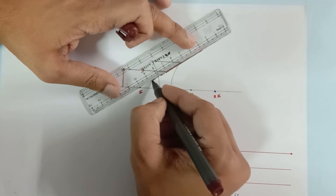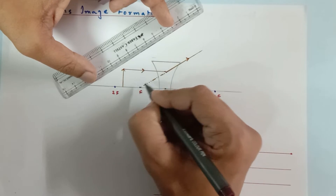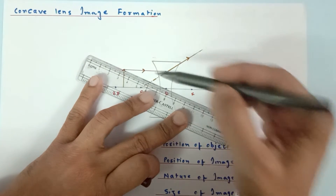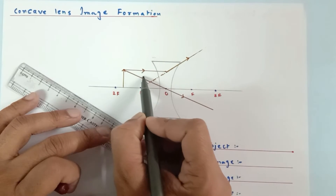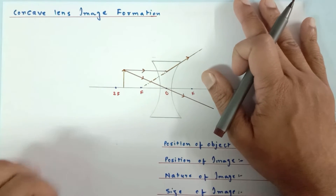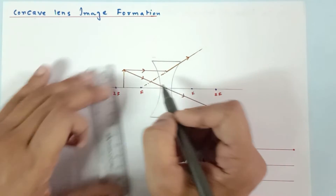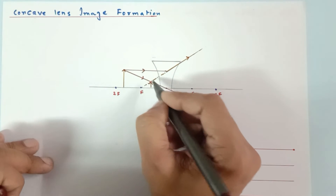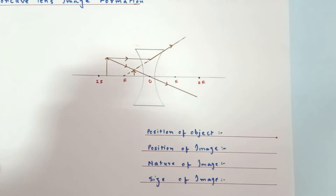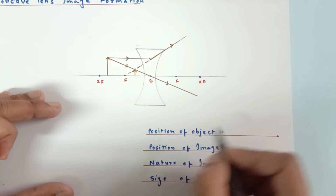Since it is a diverging lens, the first ray — which is parallel — will go in such a way that when you extend it backwards, it passes through the focus. The second ray passes through the optical center, and all rays through the optical center go straight without any deviation. The refracted rays are not meeting, so the image is virtual. Whenever refracted rays do not meet, the image is always virtual. Extending them backwards, they meet here — this is where the image is formed. Since it is virtual, the image is always erect.